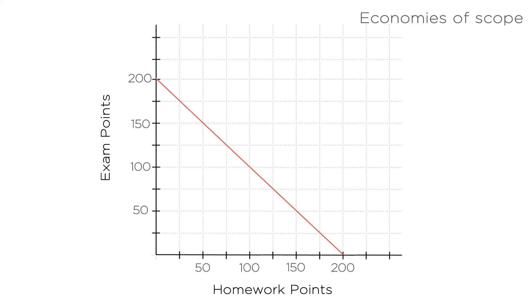We call this economies of scope. Graphically, this is represented by a convex production possibility frontier that pushes out like this. As you move from producing just homework or just exam studying to producing both, you are able to produce more total output.